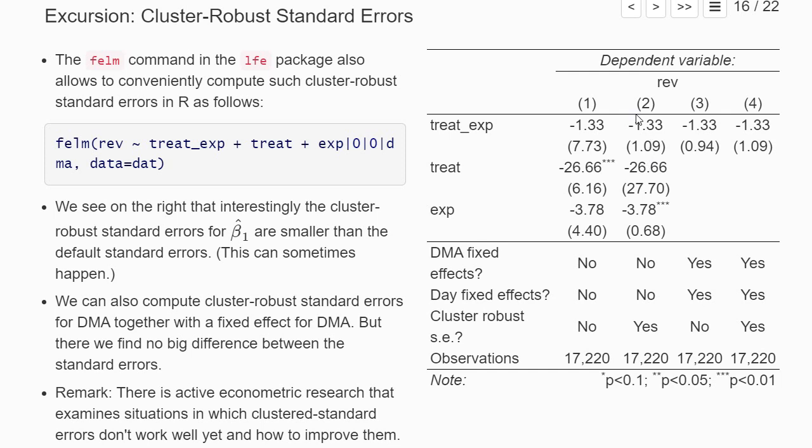For the variable of interest, using cluster-robust standard errors makes the standard error smaller. Typically in empirical papers, you very often find such cluster-robust standard errors, and it's typically written in the regression table what variable we have clustered on.